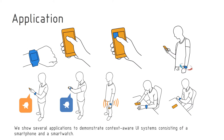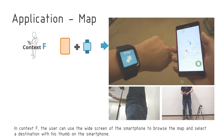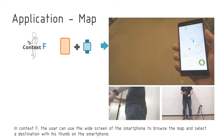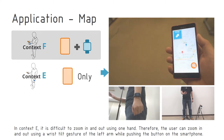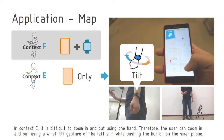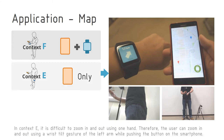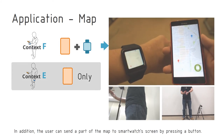We show several applications to demonstrate context-aware UI systems consisting of a smartphone and a smartwatch. First, we implemented a map application. In context F, the user can use the wide screen of the smartphone to browse the map and select a destination with his thumb. In context E, it is difficult to zoom in and out using one hand, so the user can zoom in and out using a wrist tilt gesture of the left arm while pushing the button on the smartphone. The user can also send a part of the map to the smartwatch's screen by pressing a button.